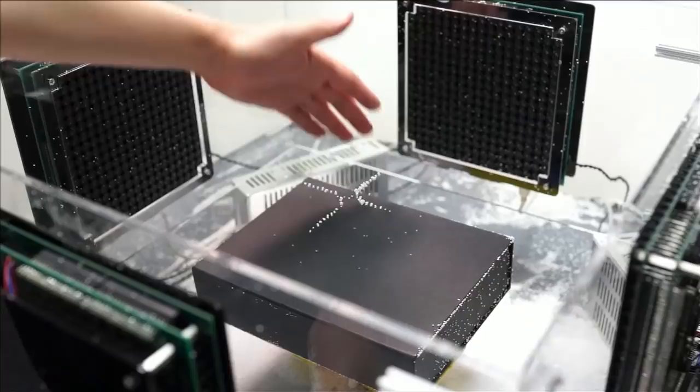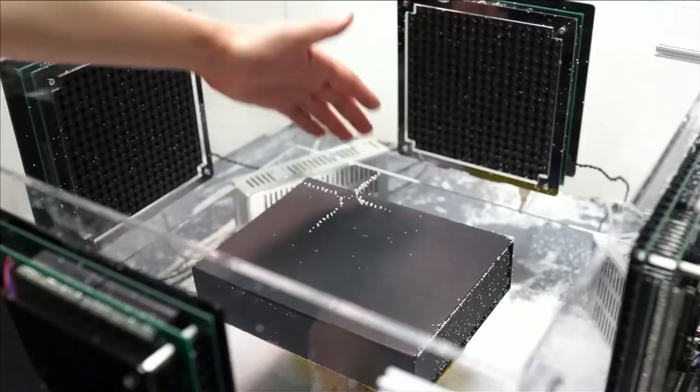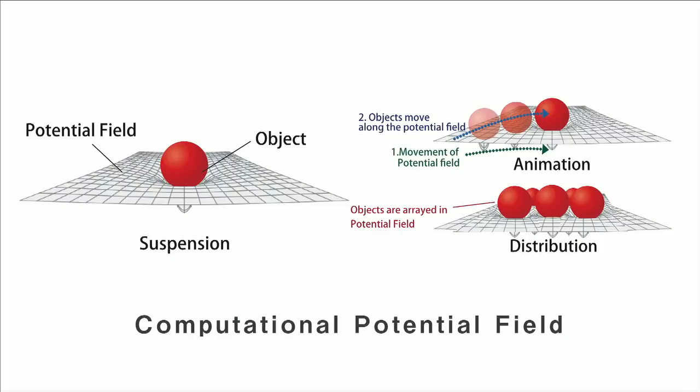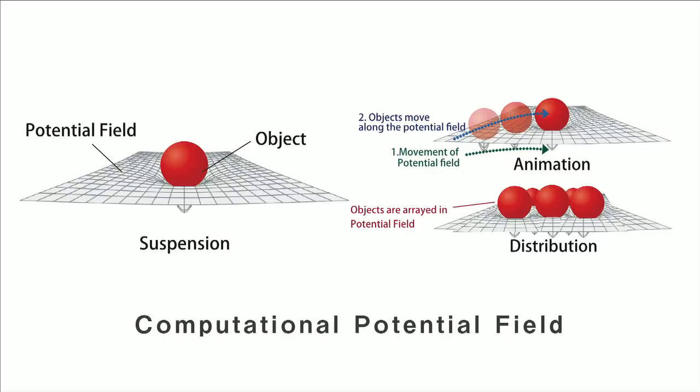How can I realize it? We suggest a computational potential field — a potential field such as an electrical force, a magnetic field, or an acoustic field. The potential field is calculated by the computer, and we can manipulate real objects by using the potential field. This acoustic levitation system is one of the examples of our concept. We generate a potential field in the air, so you can see the real potential field with your dry eyes.